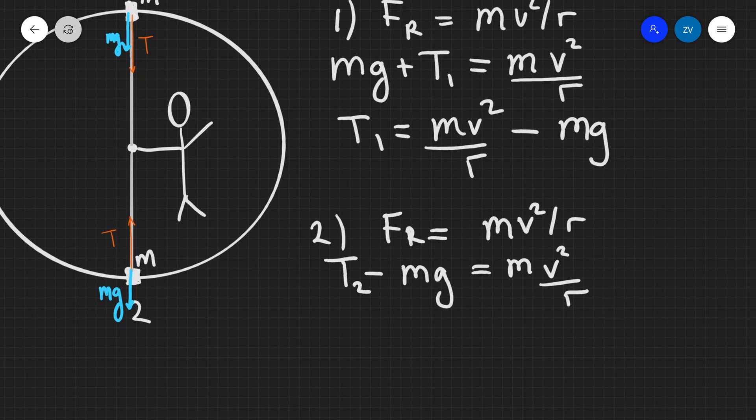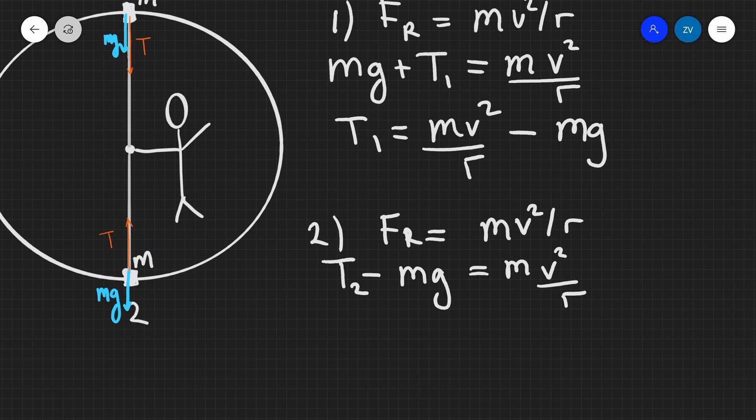And if we do exactly the same for T2, we're going to get that T2 will be mv squared over r plus mg.